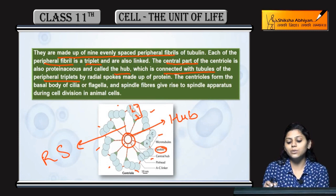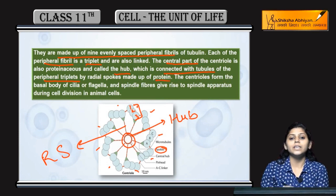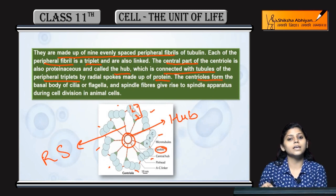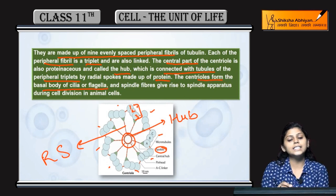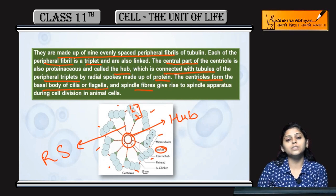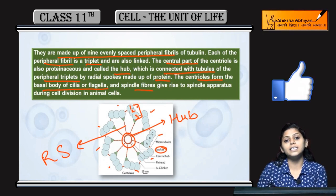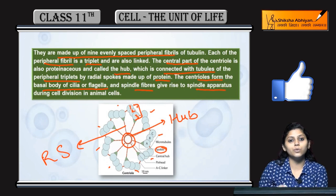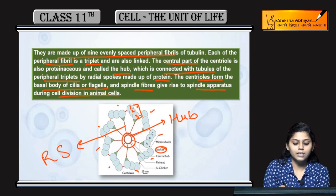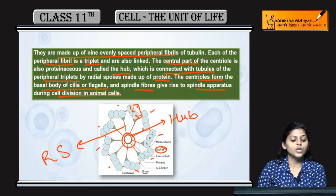The radial spokes are also made of protein. Centrioles form the basal body of cilia and flagella, and also give rise to spindle fibers that form the spindle apparatus during cell division in animal cells.